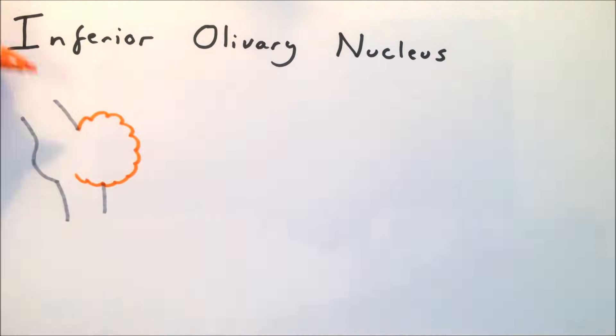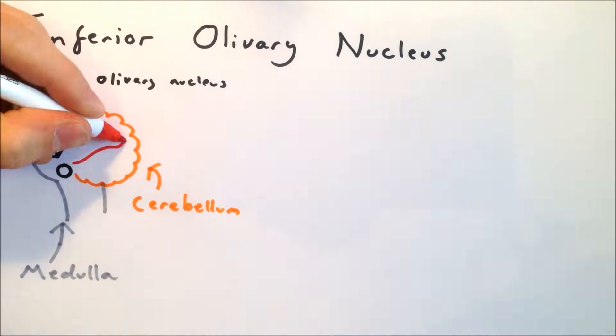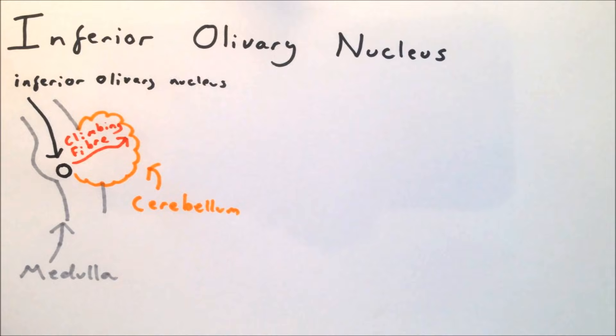This is an area of the medulla oblongata, which receives input from a variety of areas, including the ascending tracts in the spinal cord and areas of the cortex.